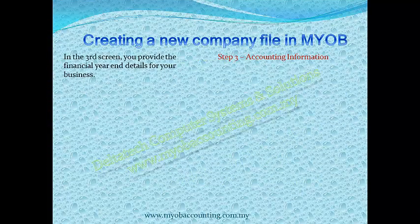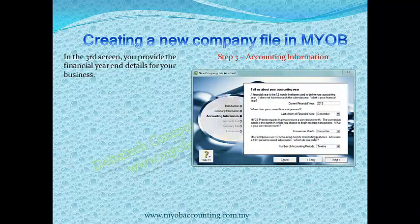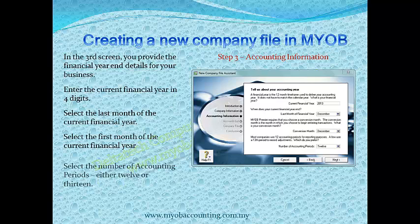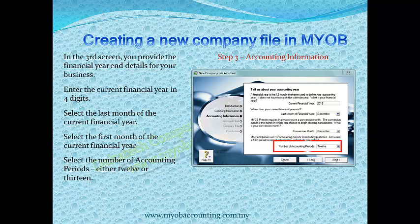In the third screen, you provide the financial year details for your business. Enter the current financial year in four digits — the current financial year is the year you will close the first set of accounts for this business that you are setting up in MYOB. Enter the last month of the current financial year, then the first month. Select the number of accounting periods, either 12 or 13. The 13th period is for entering adjustments after you close your accounts for the last month of the financial year. Click Next when ready.